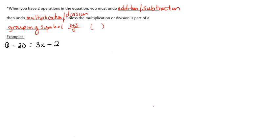For Example 1: what number, when multiplied by 3 and then subtracted 2, gives negative 20? We get rid of numbers on the same side as the variable, starting furthest from it. Add 2 to both sides to cancel the minus 2: we get 3x equals negative 18. Then divide both sides by 3 to undo the multiplication: x equals negative 6.